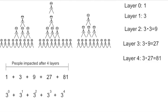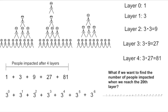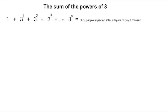If we want to find out how many people have been impacted after five layers, we just add three to the fifth. After six layers, three to the sixth. But then what if we want to find after 20 layers? Well, it starts to get a little annoying and tedious to calculate. But luckily, there's actually a formula to add up the powers of three.